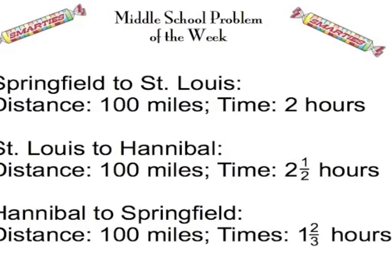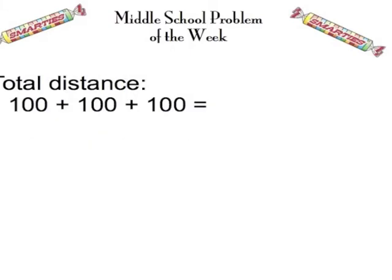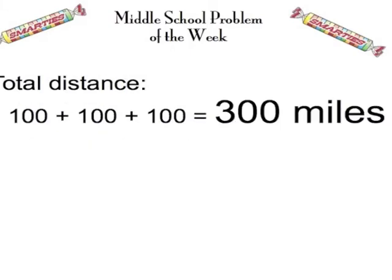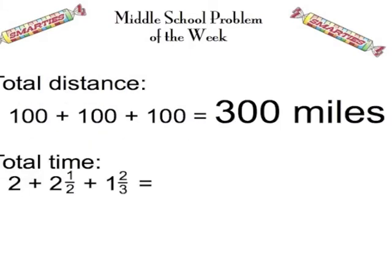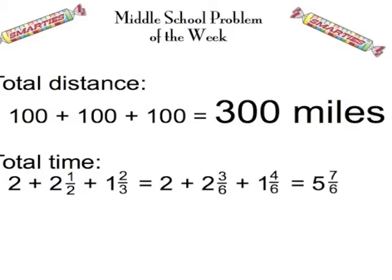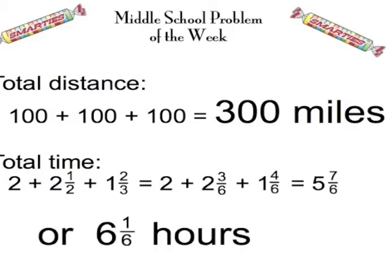So now we'll summarize. Each leg is 100 miles, and the times are shown. We'll add up the distances to get a total of 300 miles. The times are a little harder to add up — we go for a common denominator of six and get six and one-sixth hours.